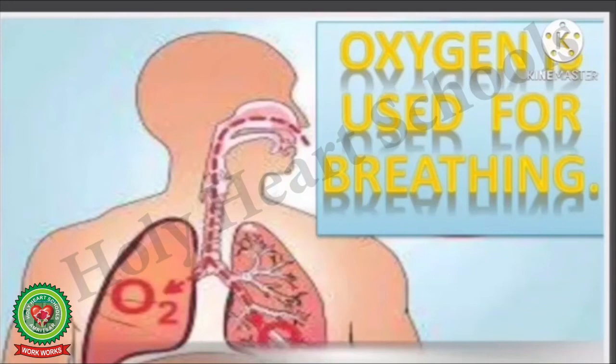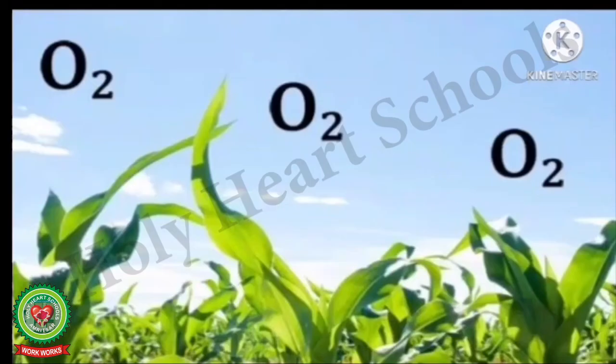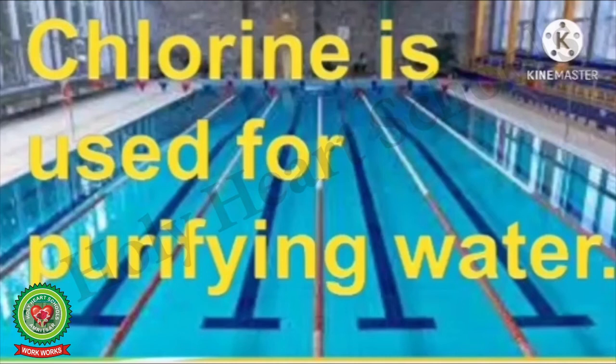Oxygen: Oxygen is used for breathing. It is a life-supporting gas and is helpful in respiration of plants and animals. It is added to air through the process of photosynthesis. Oxygen also supports combustion.